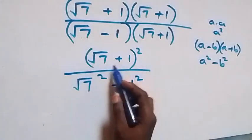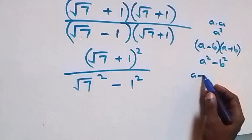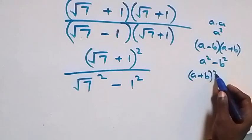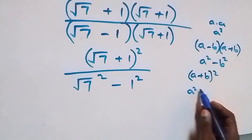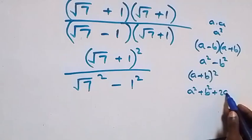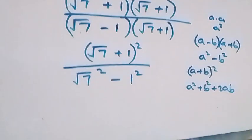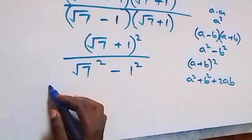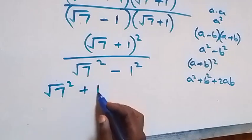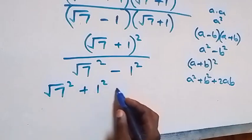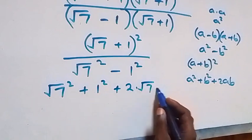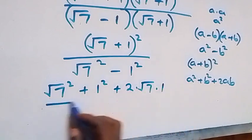We can expand the numerator bracket using (a plus b) squared, which is a squared plus b squared plus 2ab. So we have root 7 squared plus 1 squared plus 2 times root 7 times 1, all divided by the denominator.